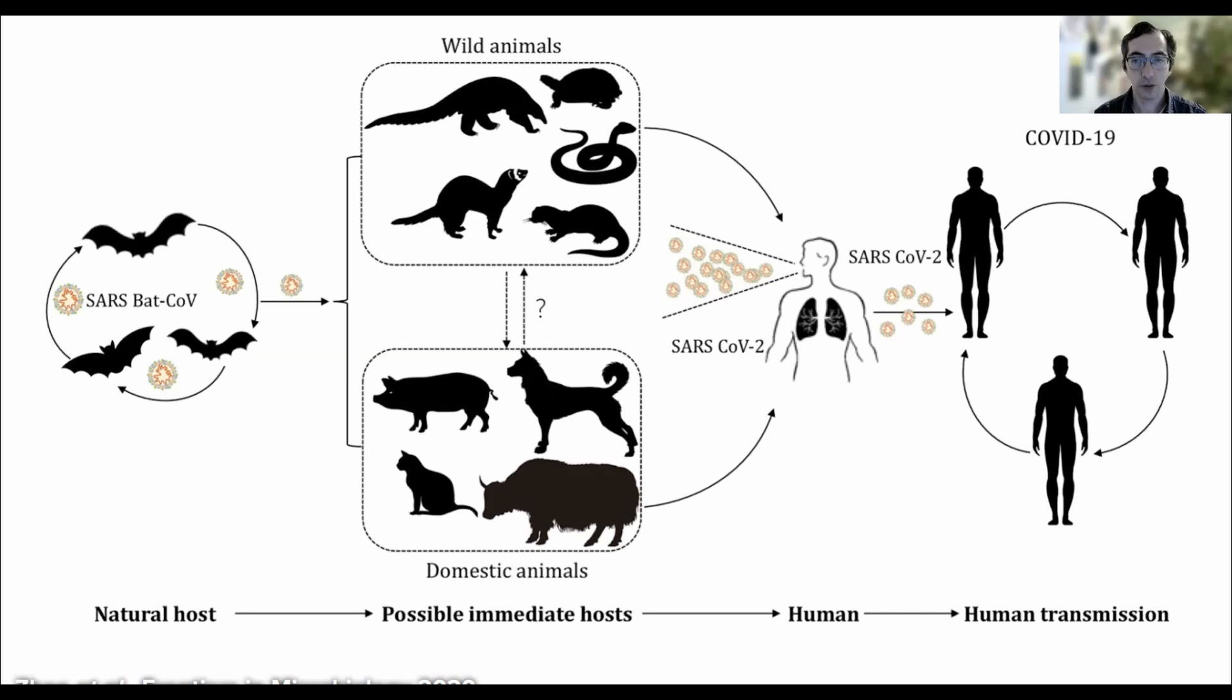Let's investigate why. The intermediate host hypothesis argues that a species with which humans have regular contact was infected by bats or similar, and in turn, humans were infected by these intermediate species. It is supported by the same data that support the direct zoonotic transfer hypothesis, but it considers one additional piece of information, historical evidence.